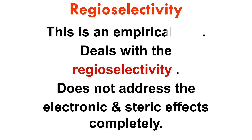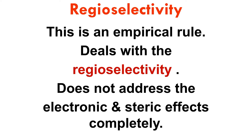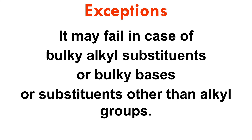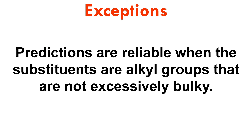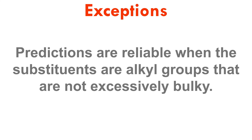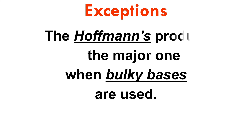Remember that this is an empirical rule. It only deals with regioselectivity and does not address electronic and steric effects completely. The rule fails in the case of bulky alkyl substituents, bulky bases, or substituents other than alkyl groups. The predictions are reliable only when the substituents are alkyl groups that are not excessively bulky. Also remember that Hofmann's product is the major one when bulky bases are used.